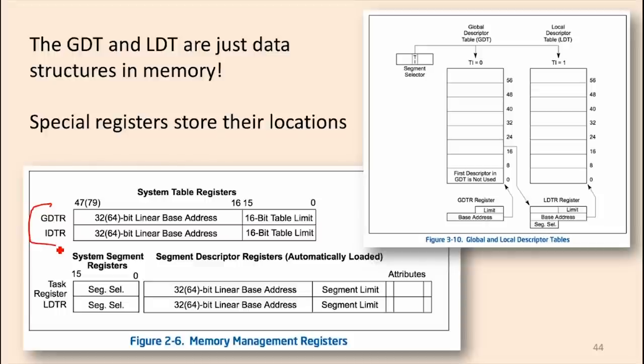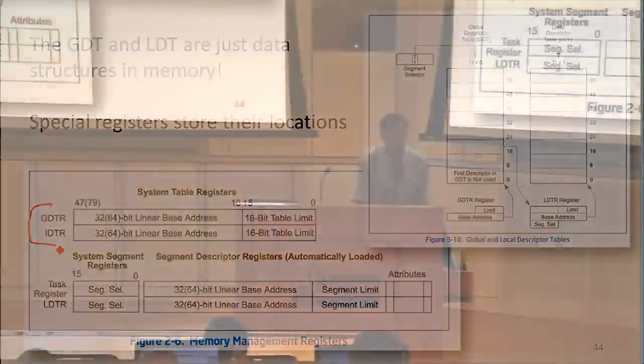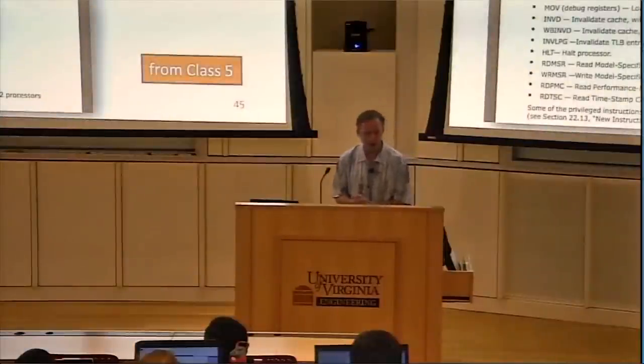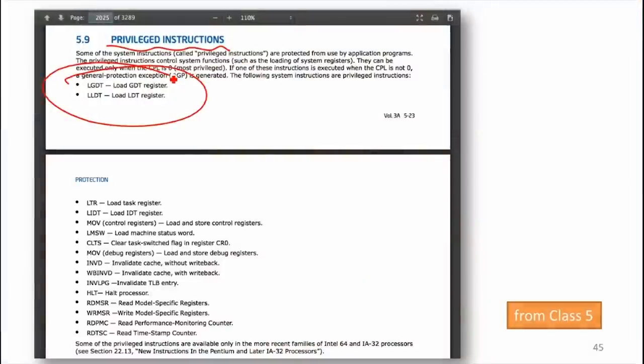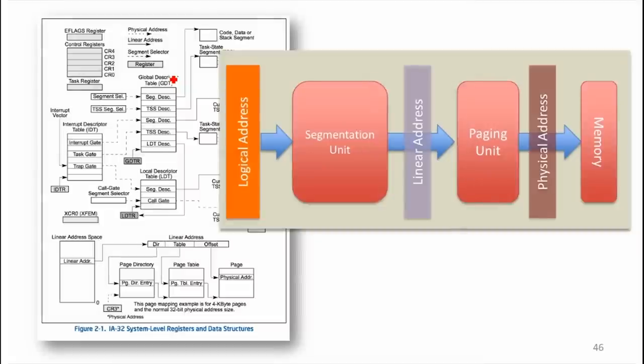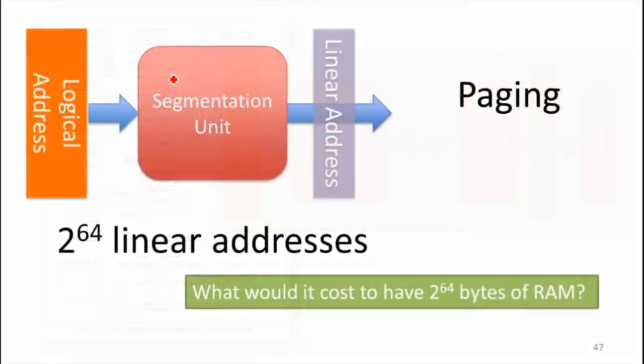If you remember last class, we looked at the list of privileged instructions on x86, and those are the first two. The first two on that list are instructions for loading values into those two special registers. We're making progress in our mapping. We've taken our logical address and turned it into a linear address space with 2 to the 64 addresses.